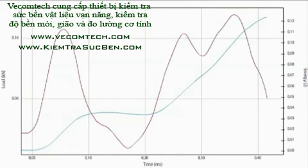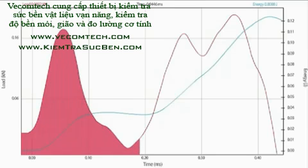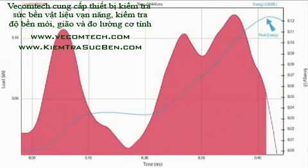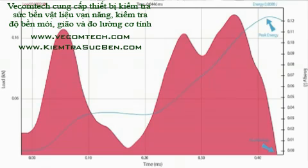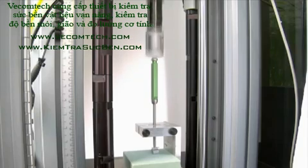The properties and characteristics obtained, such as peak energy and total energy, are but a few of the results obtained in helping determine a product's safety as well as life expectancy when subject to an impact event.